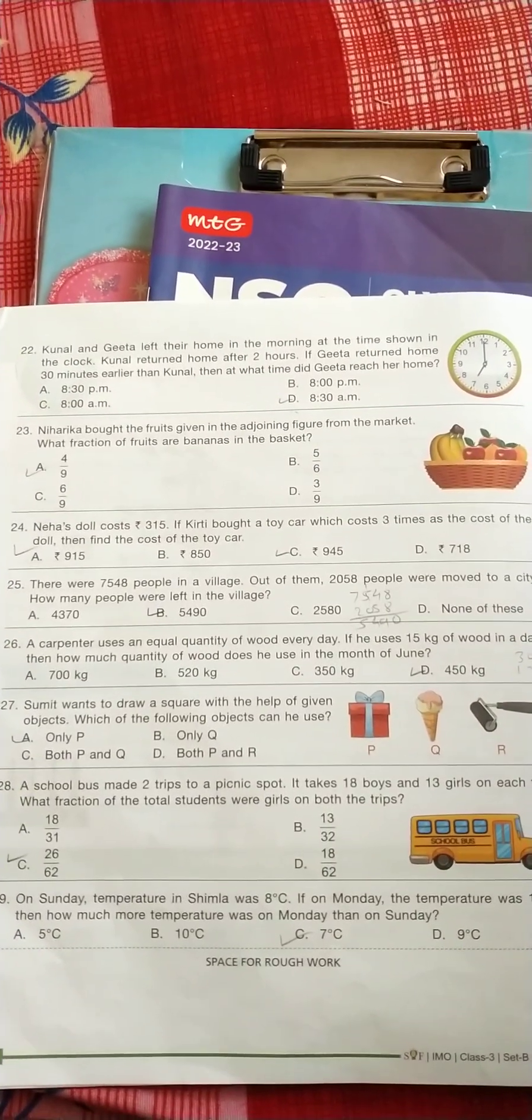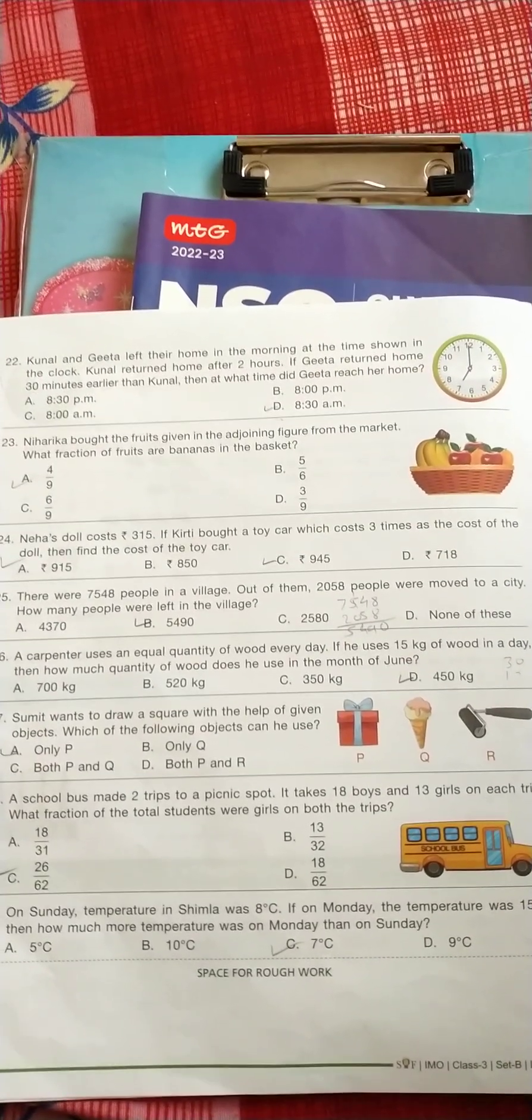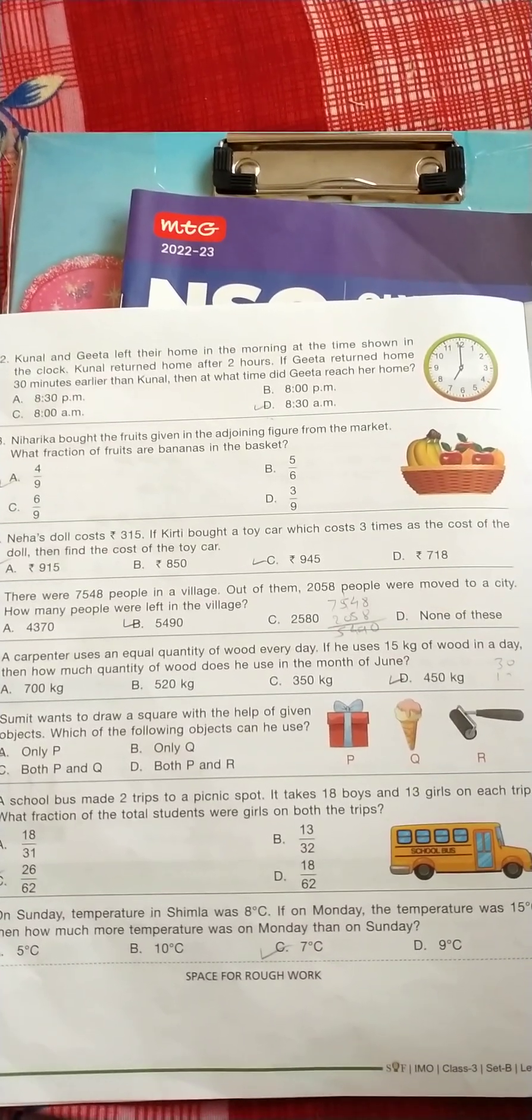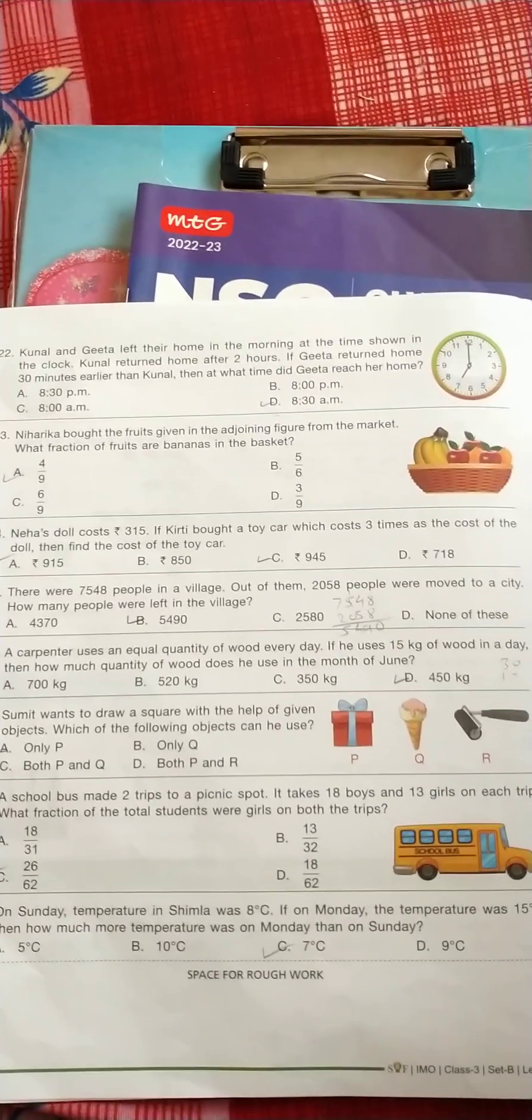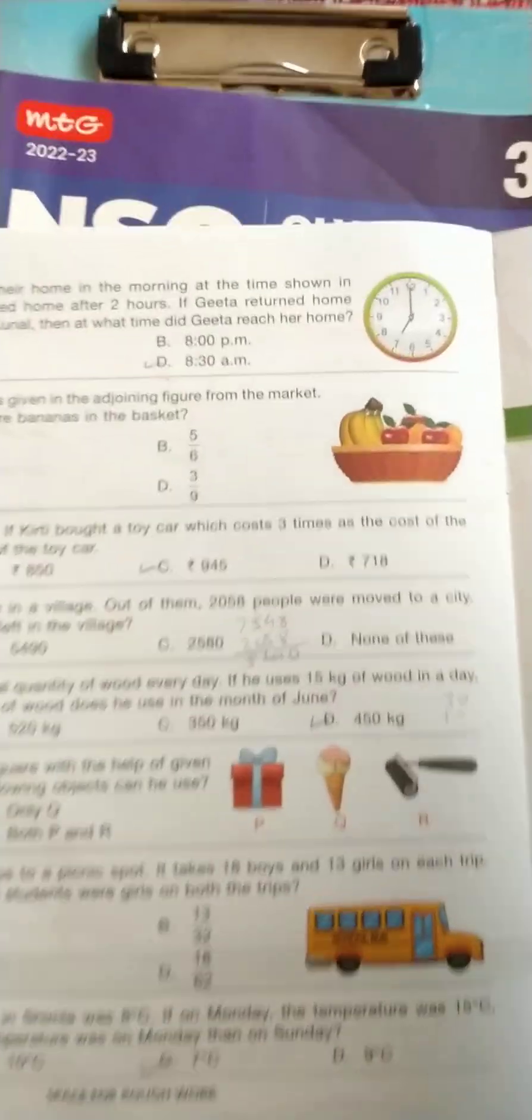Question number 23: Niharika brought the fruits given in the adjoining figure from the market. What fraction of fruits are bananas in the basket?